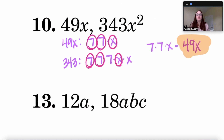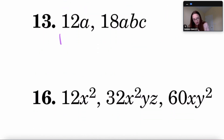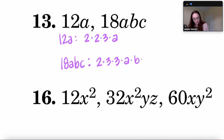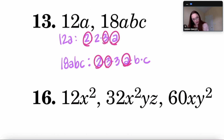For 12a and 18abc: 12a factors as 2 × 2 × 3 × a. For 18abc: 18 is 2 times 9, and 9 is 3 times 3, then times a times b times c. Both lists share one 2, one 3, and one a — so the GCF is 2 × 3 × a = 6a.